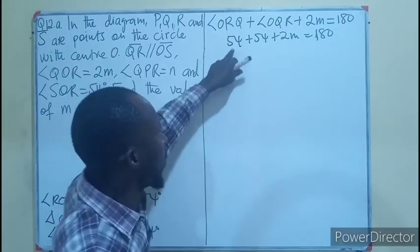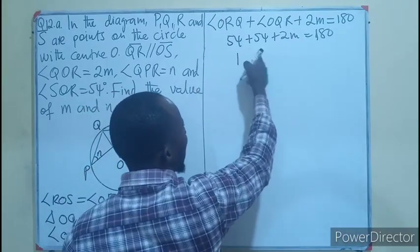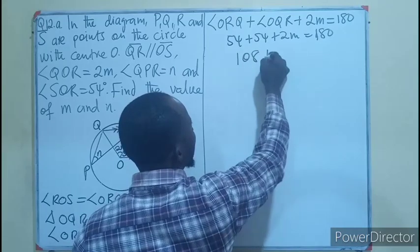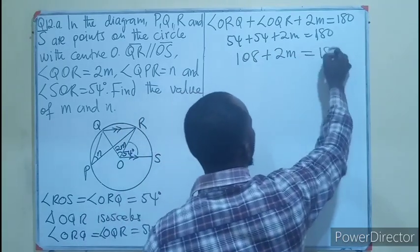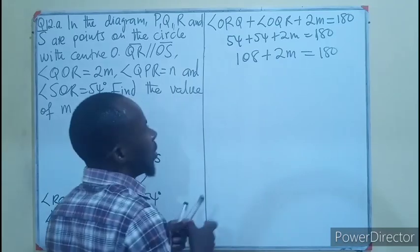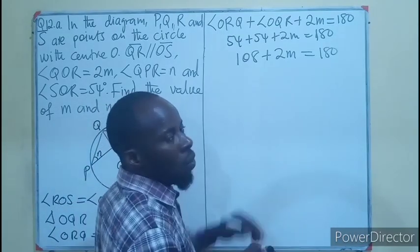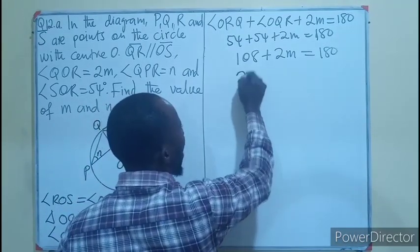108 + 2m = 180. Subtracting 108 from both sides, we have 2m = 180 - 108, which gives us 72.